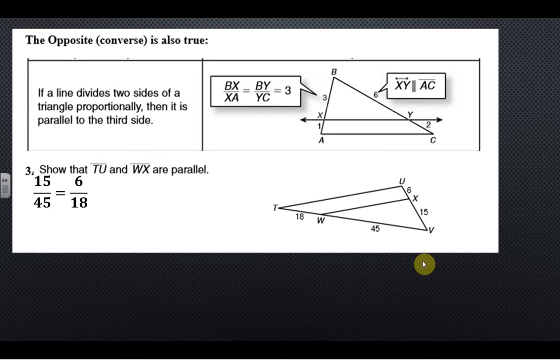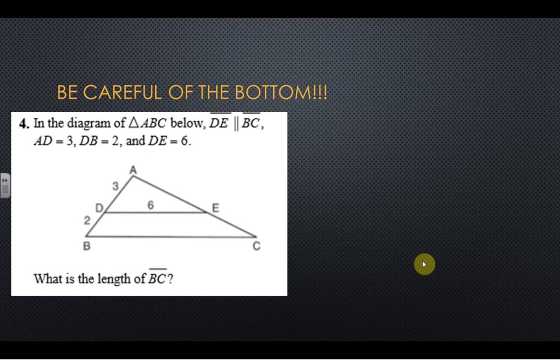They could also ask you basically the same exact question but show that they're parallel. So if you had something like this, all you would need to do is show me that the sides are proportional. So you could set up 15 over 45 equals 6 over 18, simplify, you get a third and a third, or you could cross multiply and get the same number.